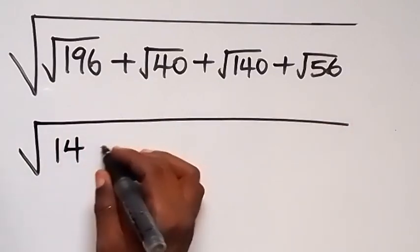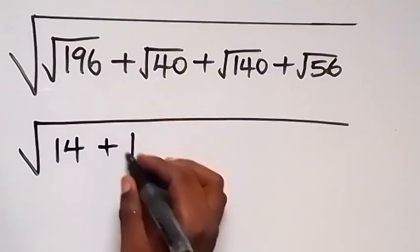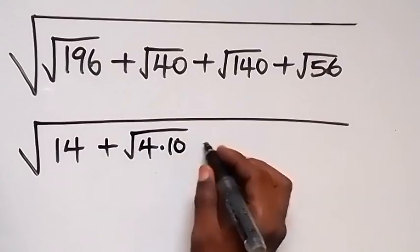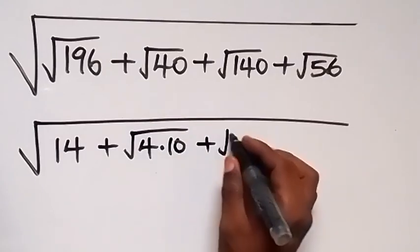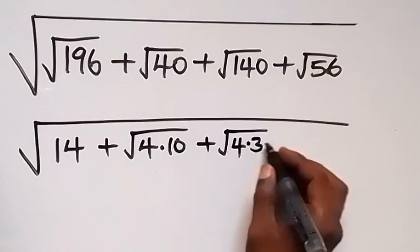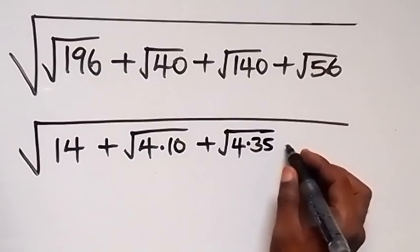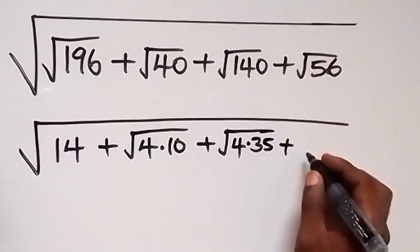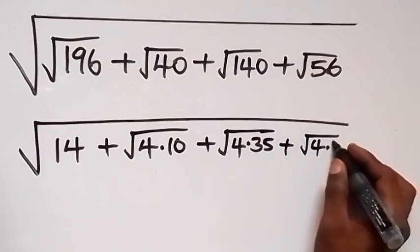Plus 14, then plus we can write root 40 as root 4 times 10, then plus root 140 we can write that as root 4 times 35, and plus we can write root 56 as root 4 times 14.